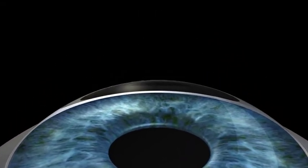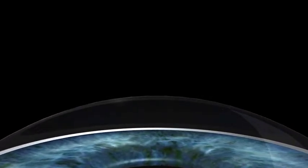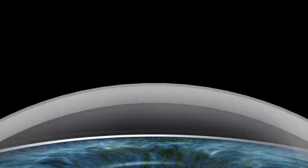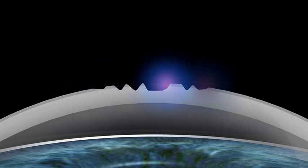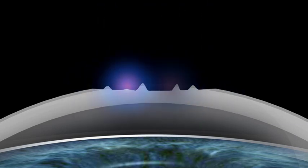TransPRK is an advanced surface laser treatment because the epithelium is removed by the excimer laser more precisely and uniformly than with either manual or alcohol-assisted debridement. TransPRK applies an epithelial thickness profile that is thinner in the center than in the periphery.